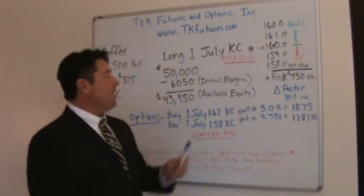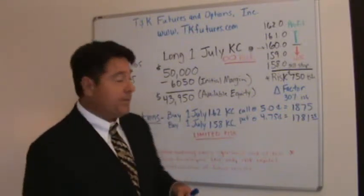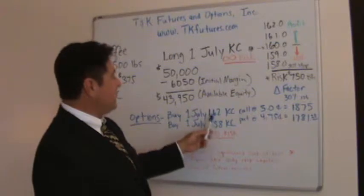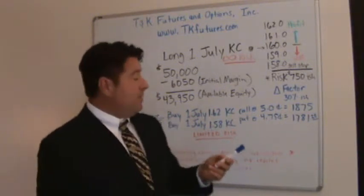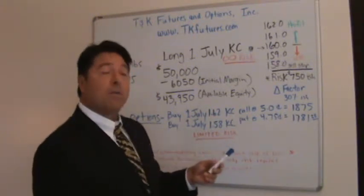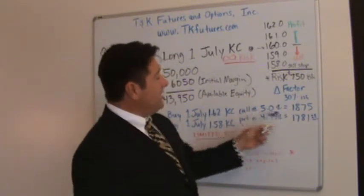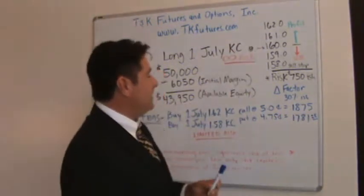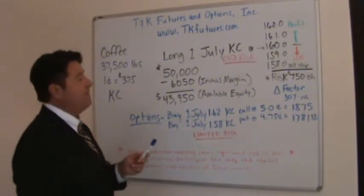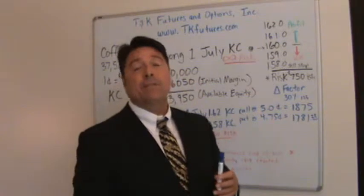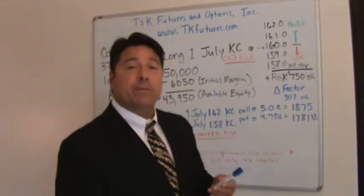The next question I typically get is: what's a call option? A call gives the purchaser the right, but not the obligation, to purchase an underlying futures contract for a specific time period — July — and a specific price, in this case $1.62. When you purchase your call, you have to pay a premium. This is hypothetical, but let's say you wanted to buy the 162 call and it costs you 5 cents. We just learned every penny is $375, so the cost of that option is $1,875 plus whatever your commission fees are.